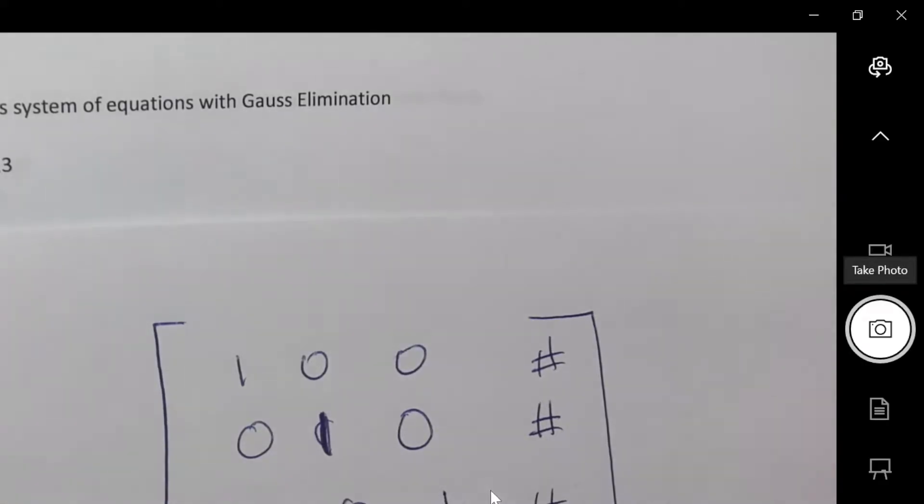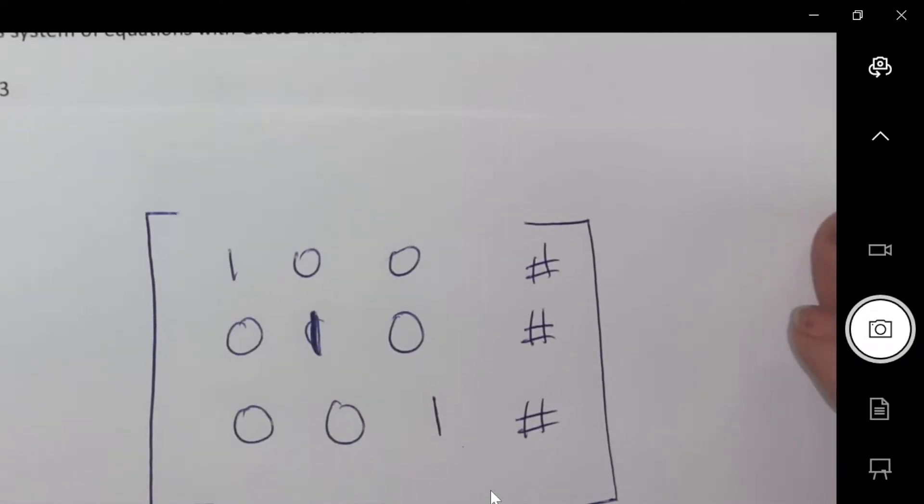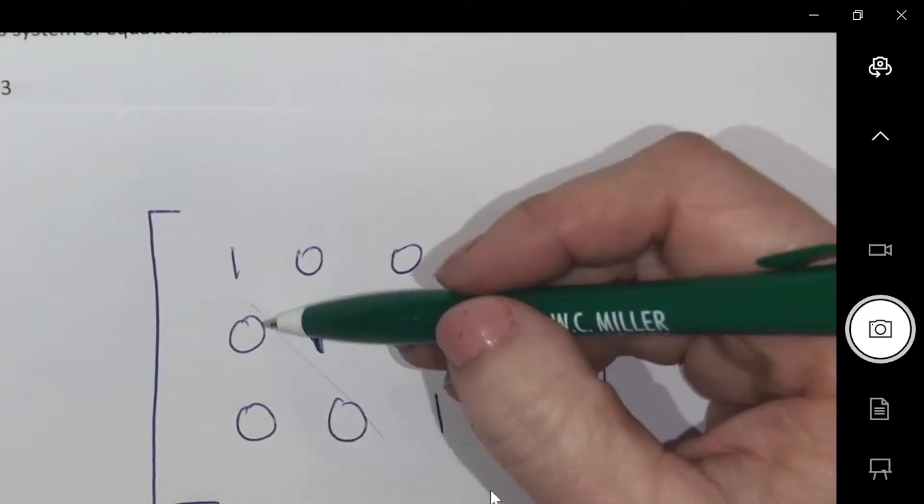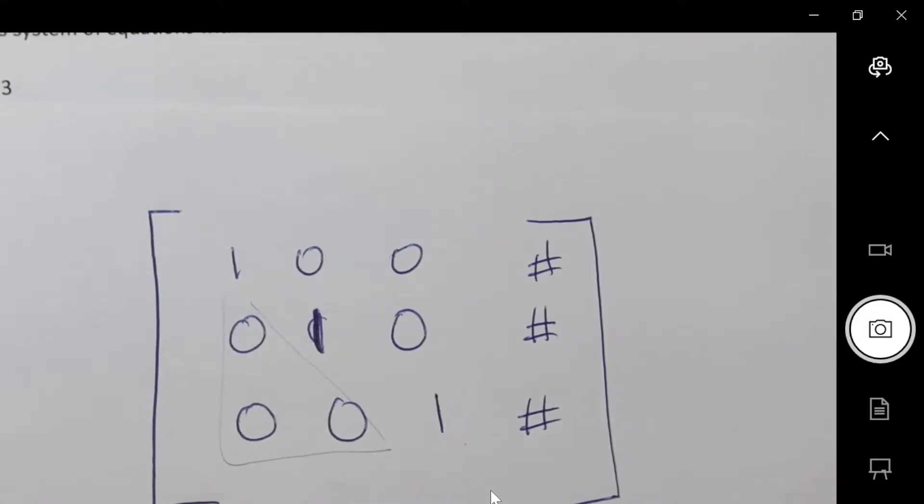Okay, so this is Gauss-Jordan method, and it's the row reduction we did yesterday. So this is what we did yesterday, the row reduction where we did those three zeros, right?